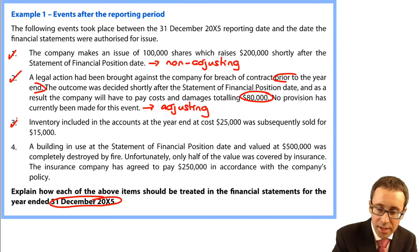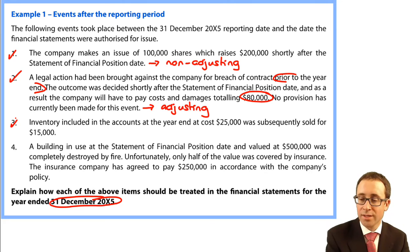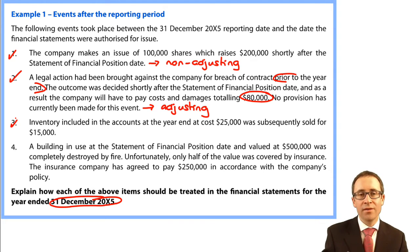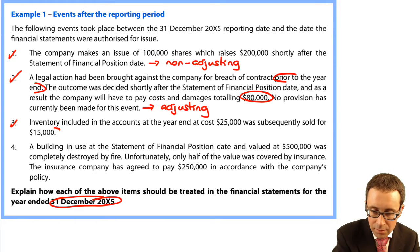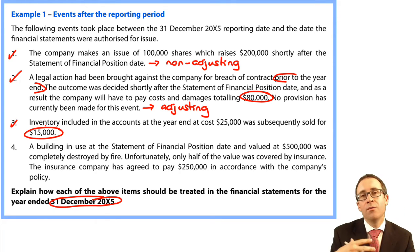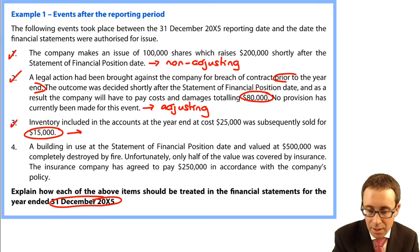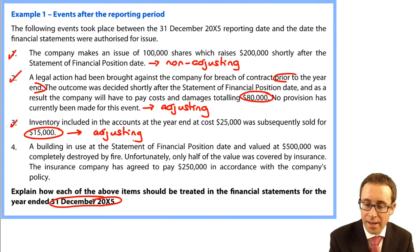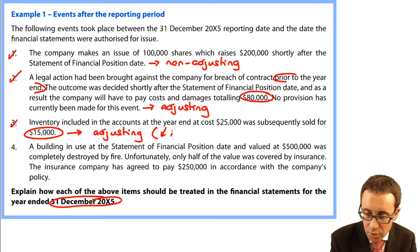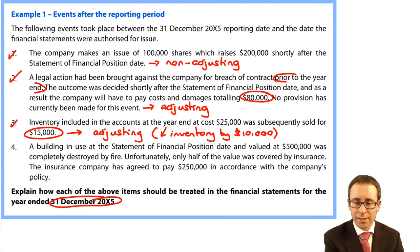Item three: inventory included in the accounts at a year-end cost of $25,000 was subsequently sold for $15,000. We held it at $25,000 and it's now been sold at below cost. The inventory was held at the end of the year and we're now getting information that it is worth less than we thought. So that is an adjusting event. You would need to reduce the value of your inventory by $10,000 — from $25,000 down to $15,000.